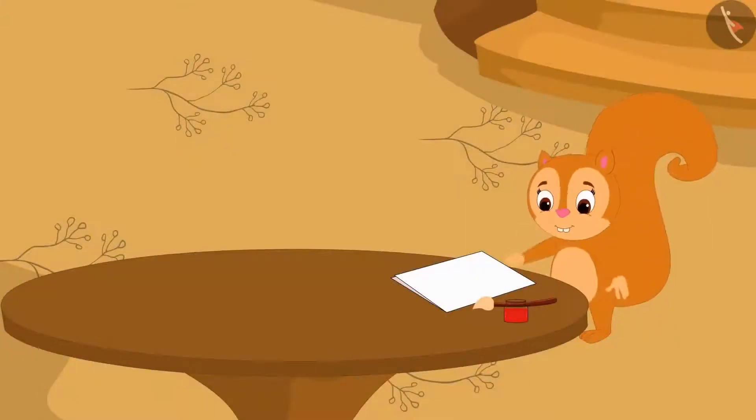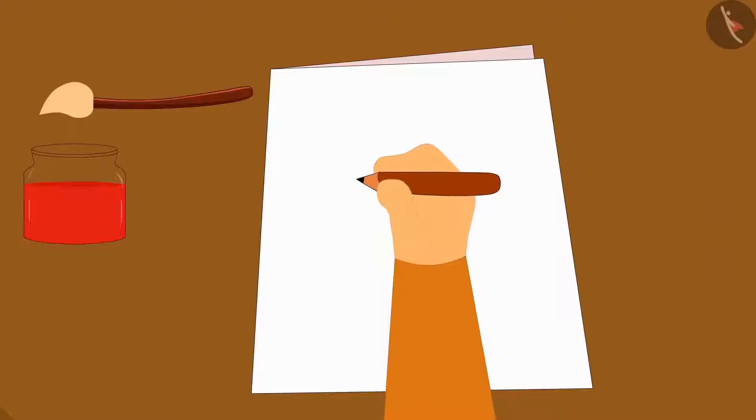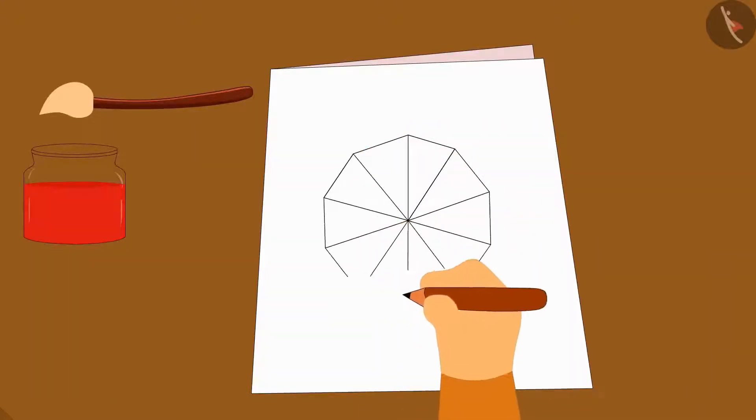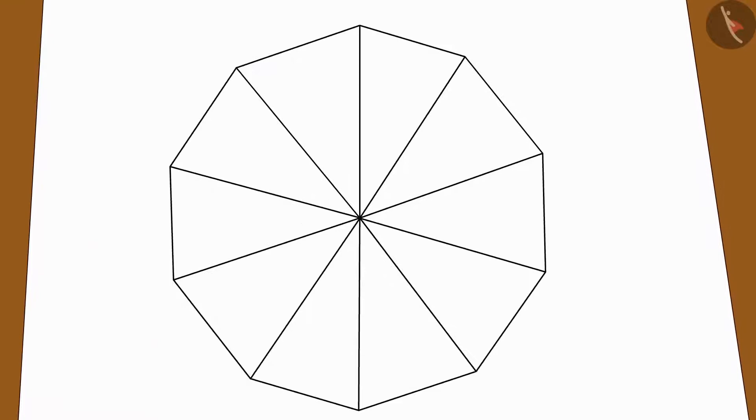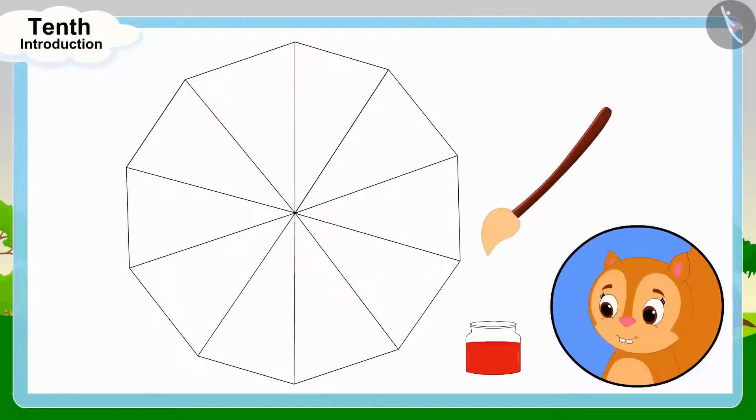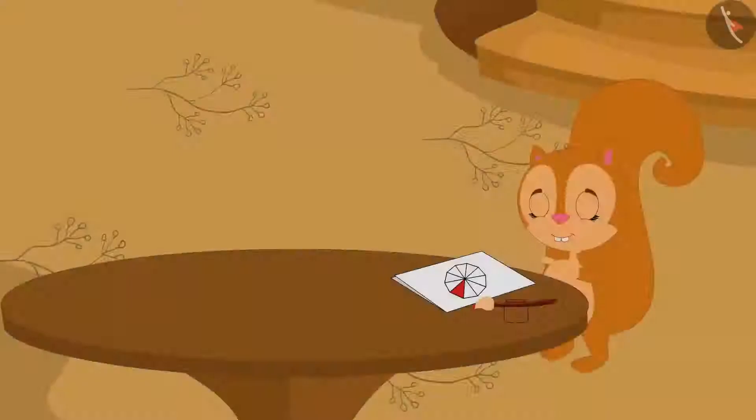Chanda is making a greeting card for Babban. She has drawn a flower on paper using 10 similar triangles. She started coloring the petals with red color. Oh no!